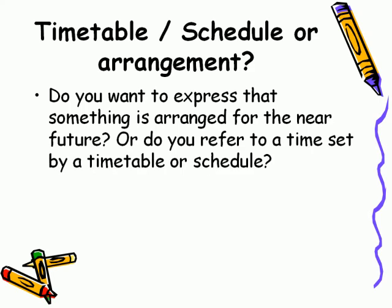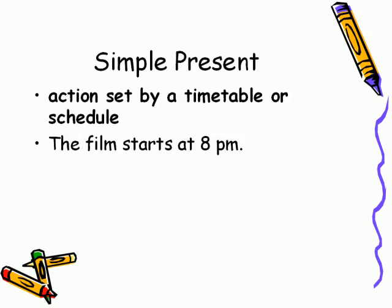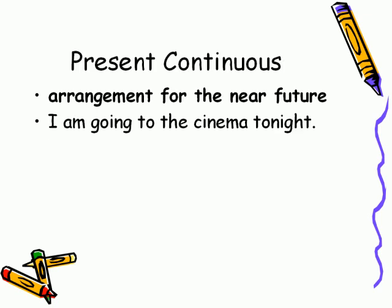Timetable, schedule, or arrangement? Use simple present for actions set by a timetable or schedule. Example: The film starts at 8 pm. Use present continuous for arrangements for the near future. Example: I am going to the cinema tonight.